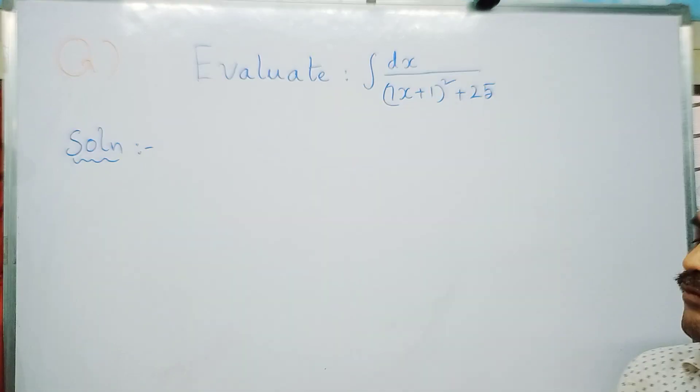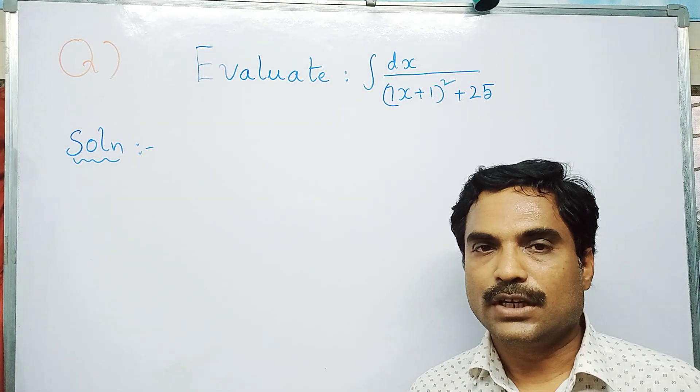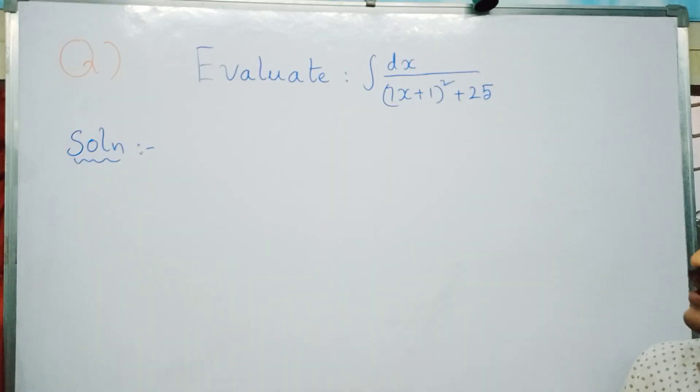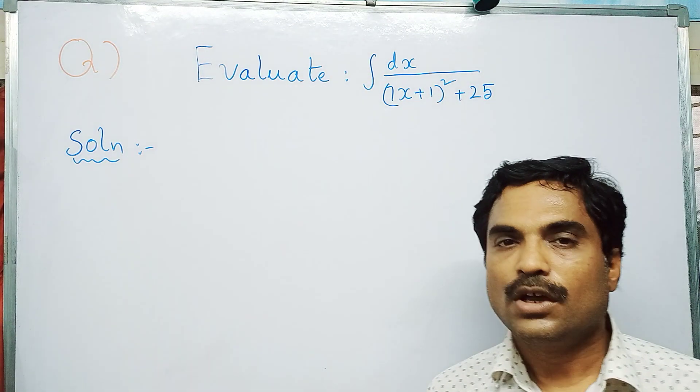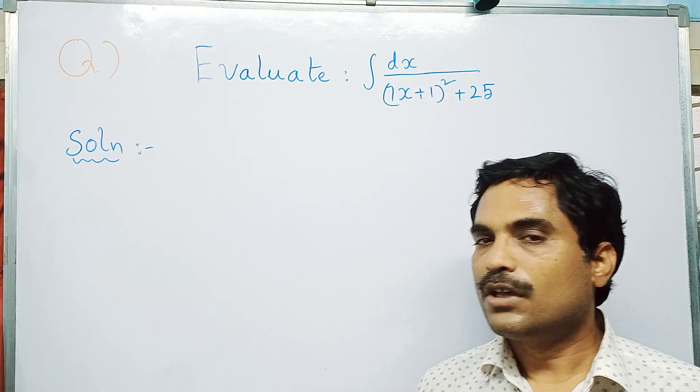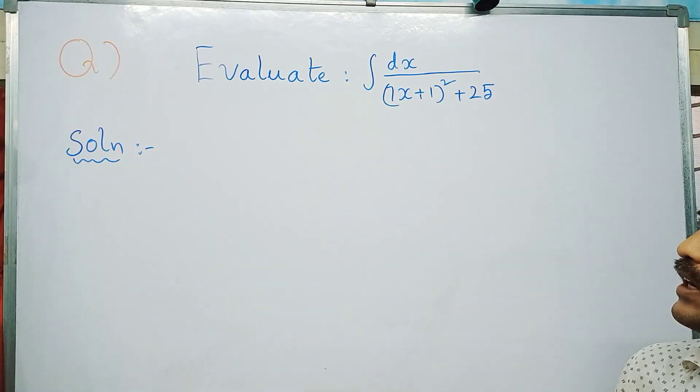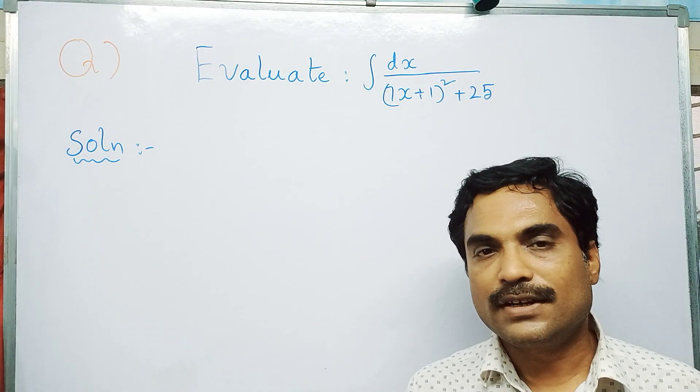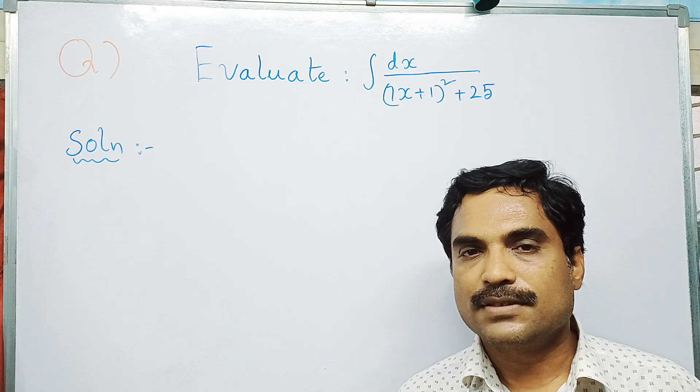To solve this problem, first we need to use substitution method. You have to put 7x plus 1 equal to u, then differentiate to get du, and then substitute in that given integral. Then you have to use the formula: integral dx by x² plus a².